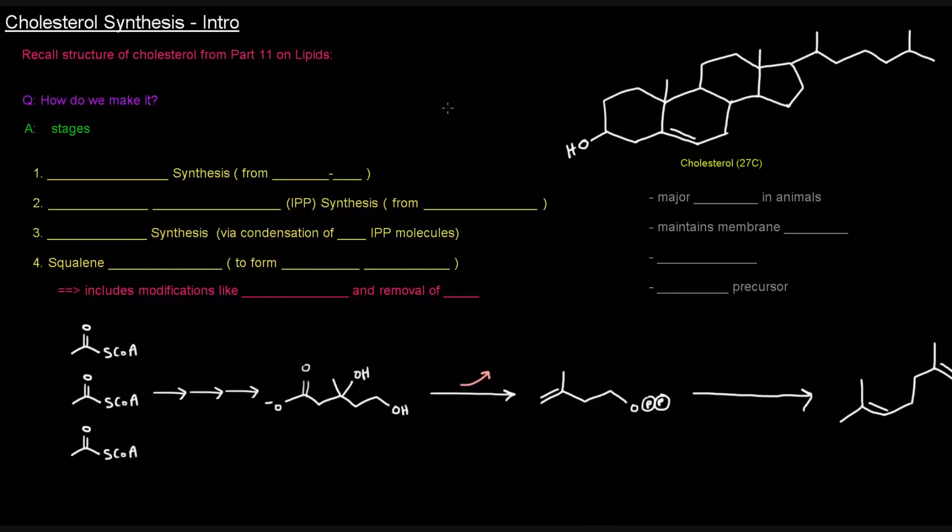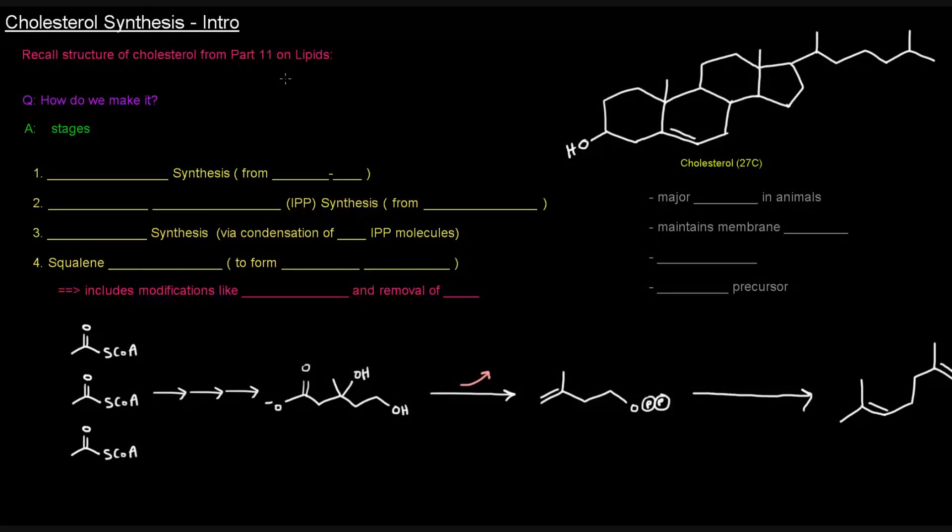So if you recall from part 11 on lipids, we talked about steroids and we talked about cholesterol specifically. We said that it was the major sterol in animals and it was really important. It also maintains membrane fluidity. It's also amphipathic or amphiphilic, and it's also a steroid precursor. So it's a really important molecule. Now the question is, how do we make it?